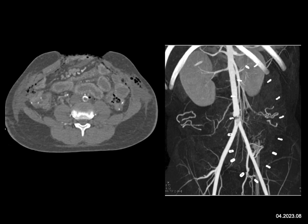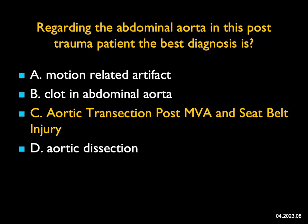Regarding the abdominal aorta in this post-trauma patient — on the axial there appears to be a clot, and on the MIP coronal there's a step-off that initially seems like artifact or motion, but there's no motion elsewhere in the image. It's not simply a dissection flap. The best answer is aortic transection post-MVA from a seat belt injury, near the umbilical level. The patient was lucky — the aorta remained intact, no massive bleeding, and they were eventually stented.